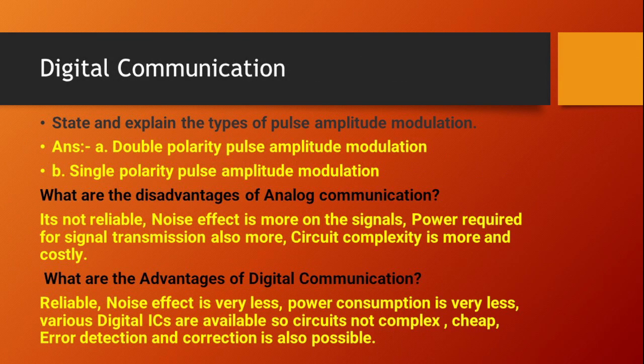The next questions are on digital communications. What are the types of pulse amplitude modulation? The types are double polarity pulse amplitude modulation and single polarity pulse amplitude modulation. What are the disadvantages of analog communication?